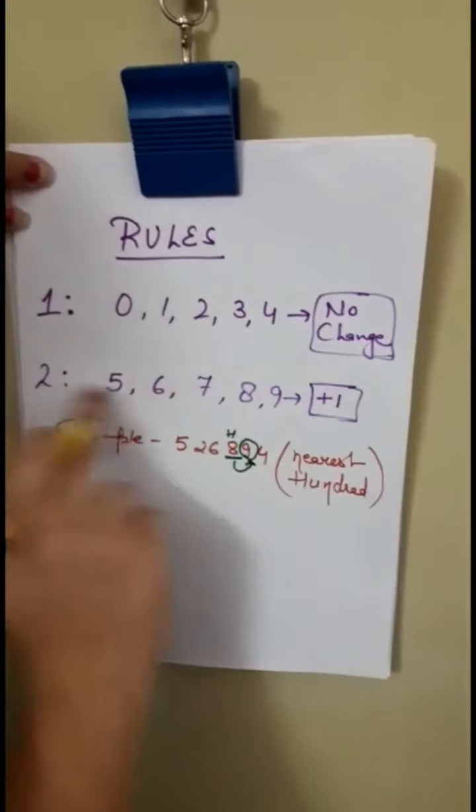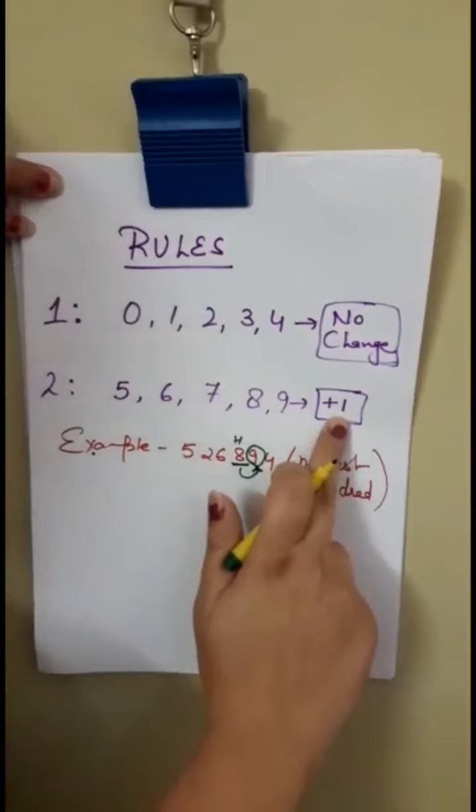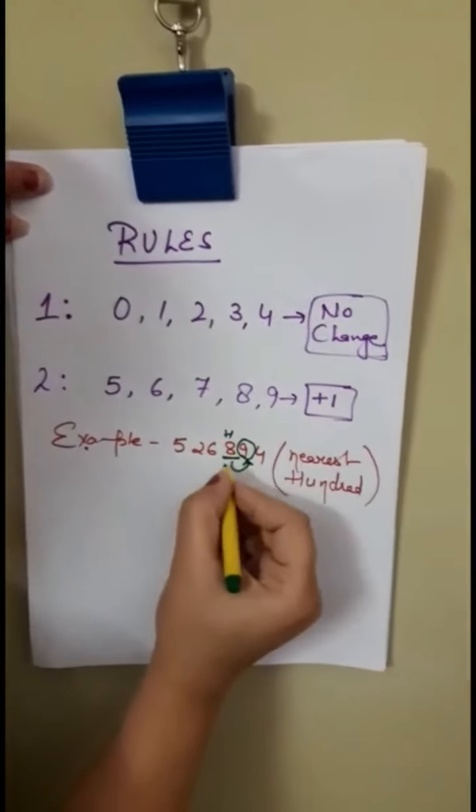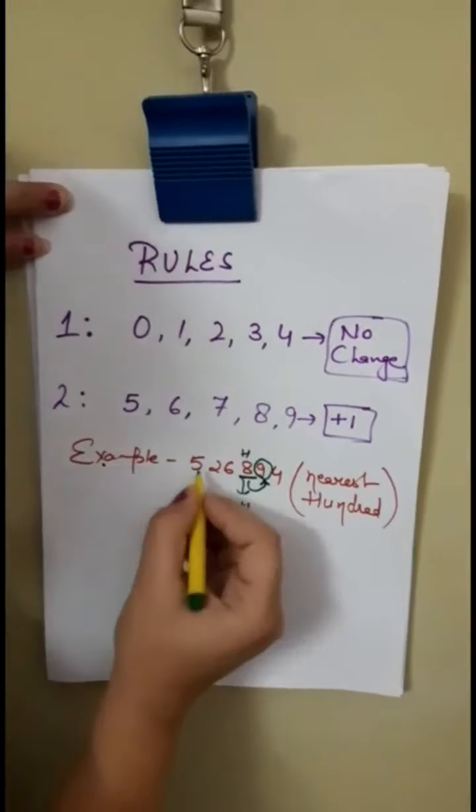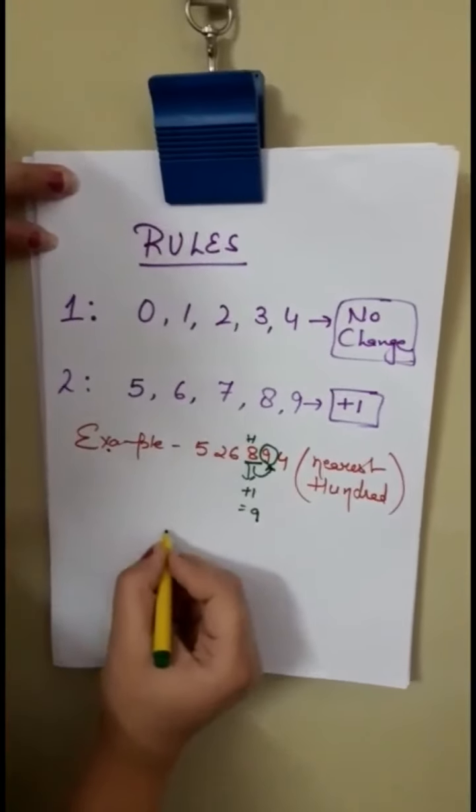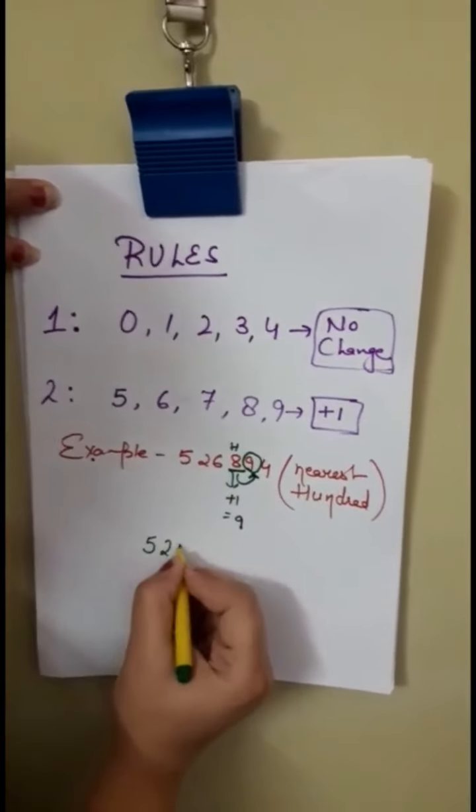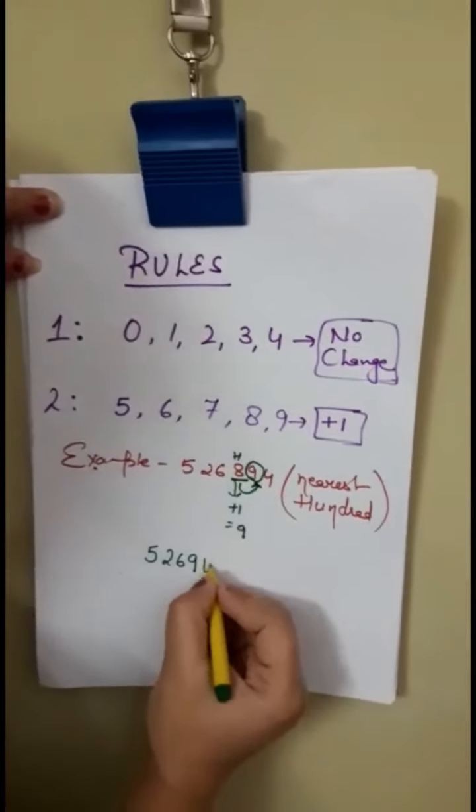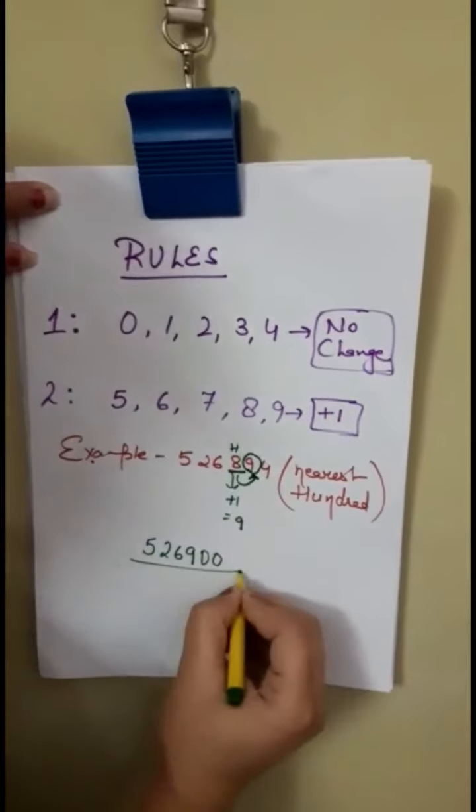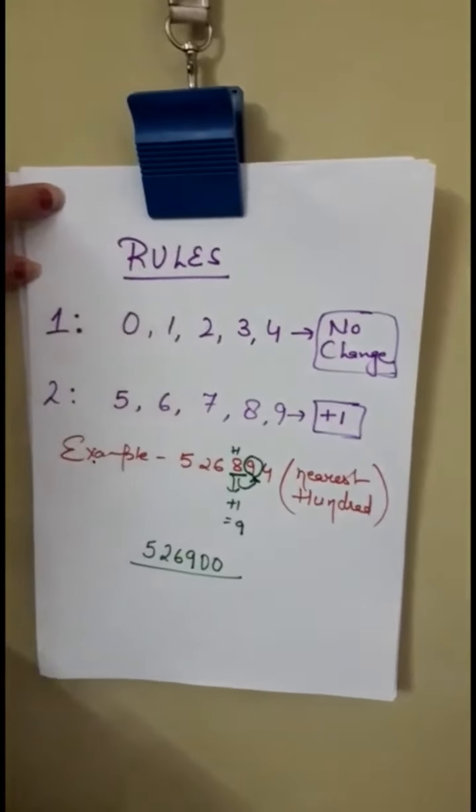That means kya ho jayega? Plus 1. To 8 mein hooga plus 1. It will become 9. To let's write the number. Idhar left side wale numbers will be same: 5, 2, 6. Then 9. And 9 ke aagye wale right side wale numbers kya ho jate hai? 0, 0. So this is rounding off to nearest 100. Same way we will round off to nearest 1000 also.